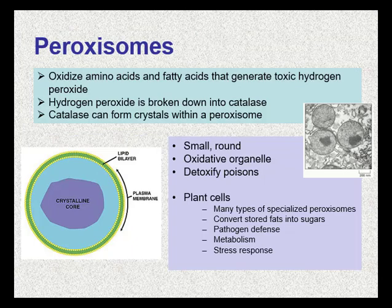Peroxisomes are small round organelles enclosed by a single membrane. They carry out oxidation reactions that break down fatty acids and amino acids, and can also detoxify many poisons. Plant cells may contain many types of peroxisomes that may play a role in metabolism, pathogen defense, and stress response. Peroxisomes work by oxidizing amino acids and fatty acids, generating toxic hydrogen peroxide, which is then broken down by catalase. Catalase can form crystals within a peroxisome — if you look at them under a microscope, you may see a large dark mass, which is the crystalline core.